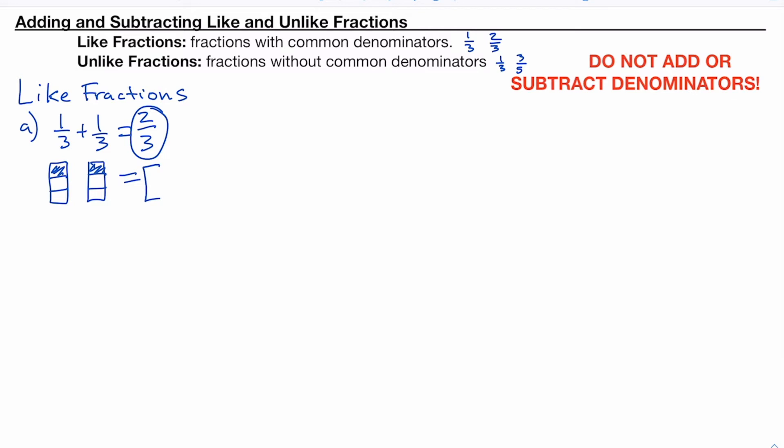If we were to show it visually, we've got two-thirds. That's what it means there. Let's look at another quick example with like fractions. Let's say we had something like three-fifths plus four-fifths. We've already got common denominators. They are like fractions. We do not add the denominators. We just add the numerators. We would get seven-fifths.